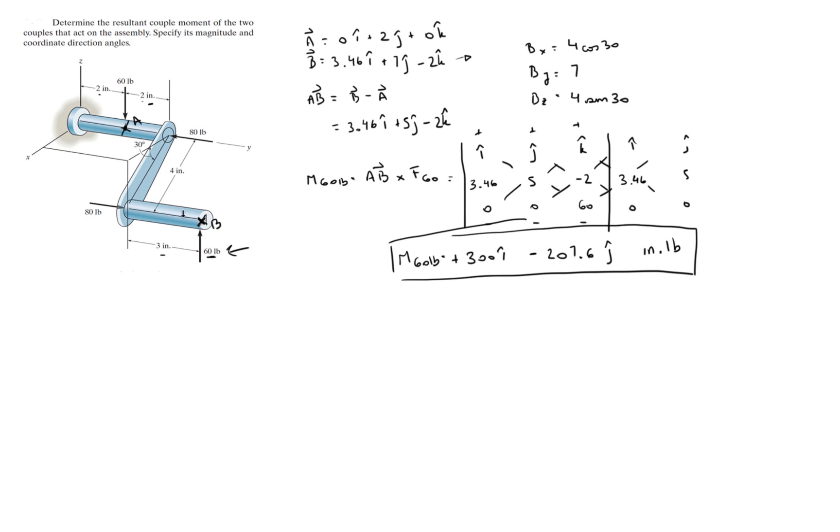I haven't done this in a while, I gotta get the hand of it again. So now we have to do the same thing to find the couple moment created by this 80 pound force. We're going to go through the same motions. We're gonna call this point C, we're gonna call this point D. Once we got C and D, we know that CD is equal to whatever D is minus C.